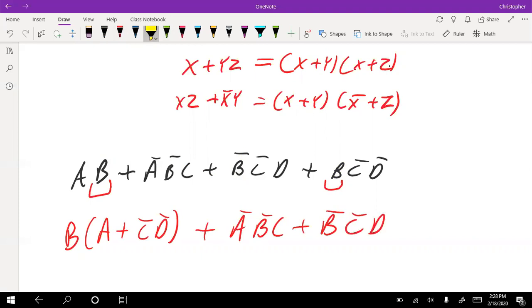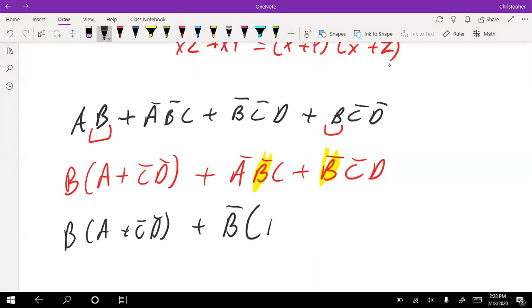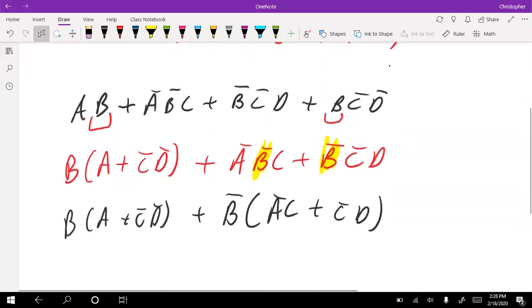Now I'm going to focus on getting to a B bar. I'm going to focus on these two terms here and do the same thing. I'm going to pull out B bar. I'll get B bar times A bar C plus C bar D. Now we're starting to form that we have this x and x bar.